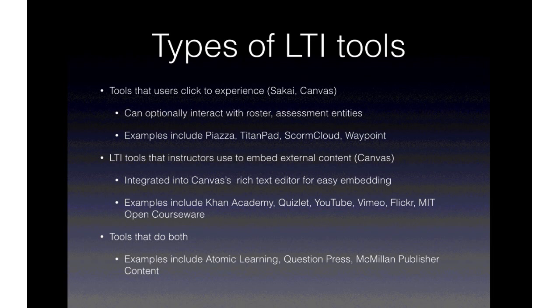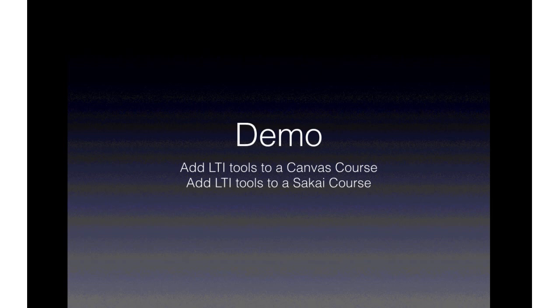The last category, from a functional perspective, is tools that do both things. Examples include Atomic Learning, where instructors can create a link to the Atomic Learning environment for students to use, but also optionally select content from inside Atomic Learning and embed it somewhere in Canvas. That's another capability that Sakai doesn't do very nicely. I'm going to show you the user experience when adding an LTI tool to both a Canvas course and a Sakai course.